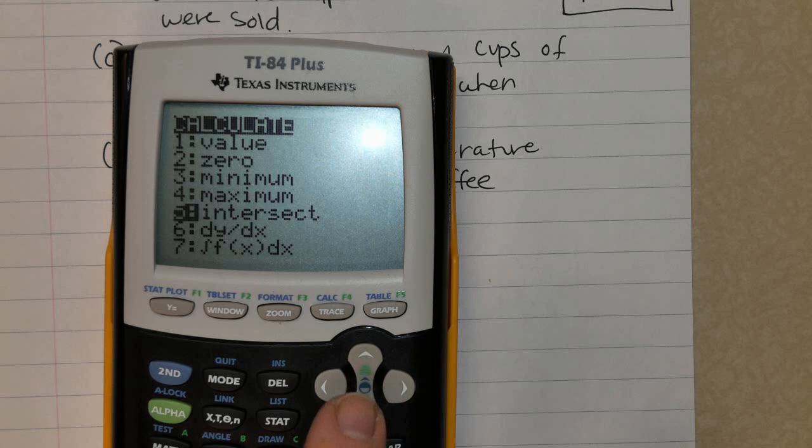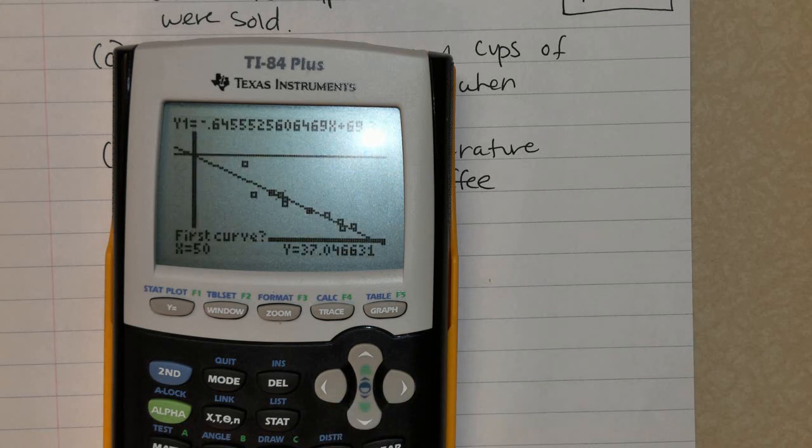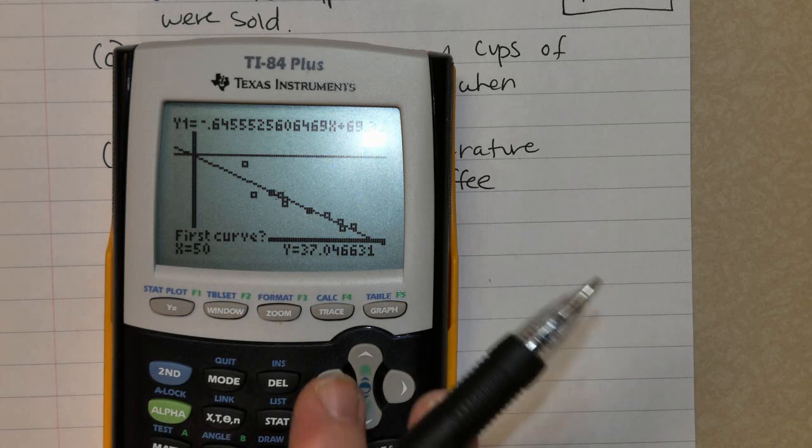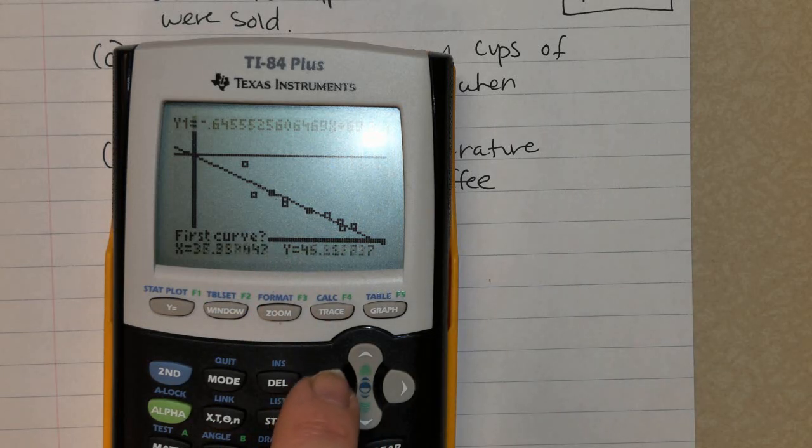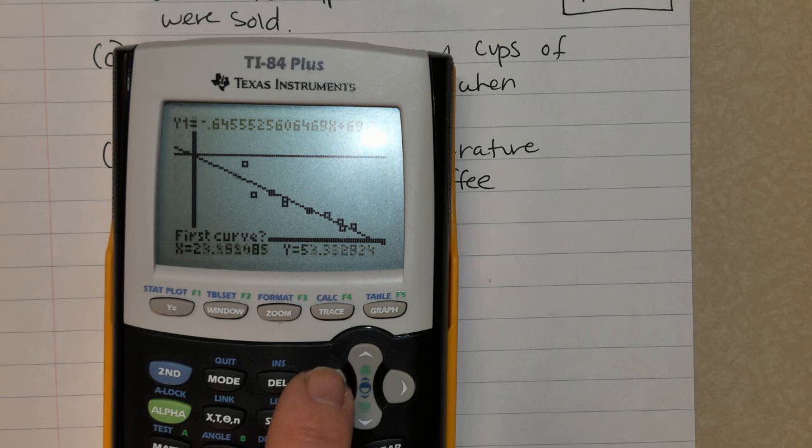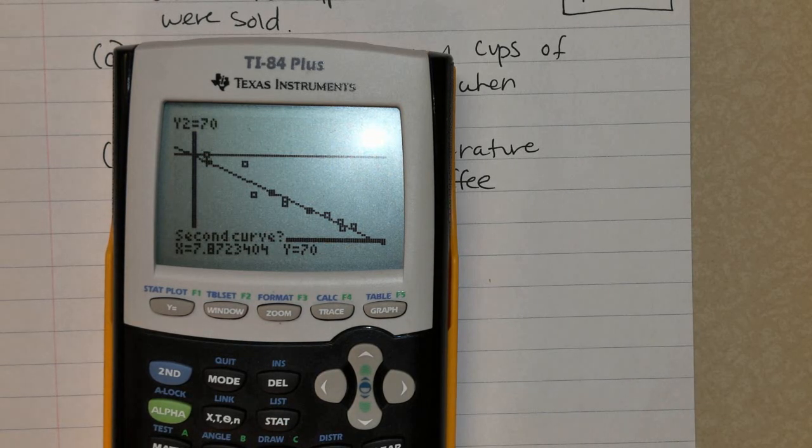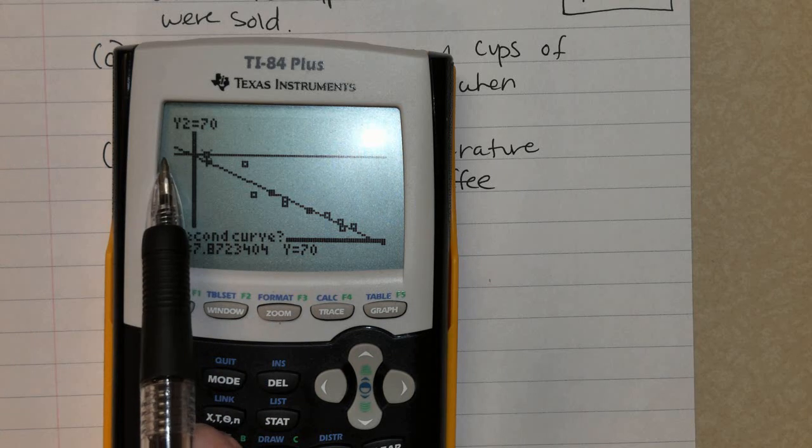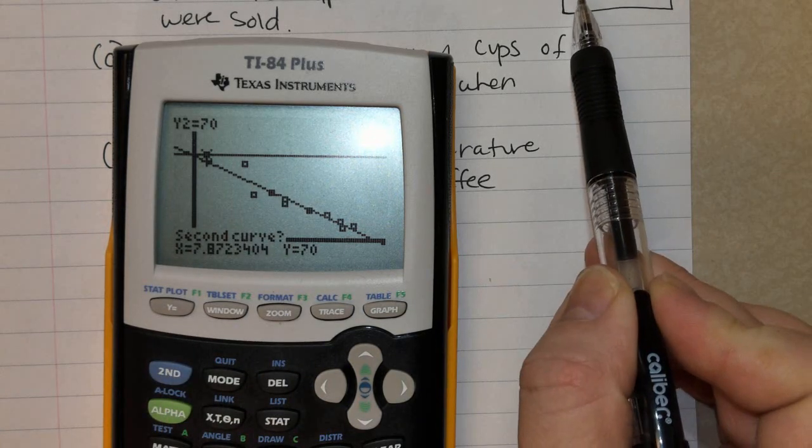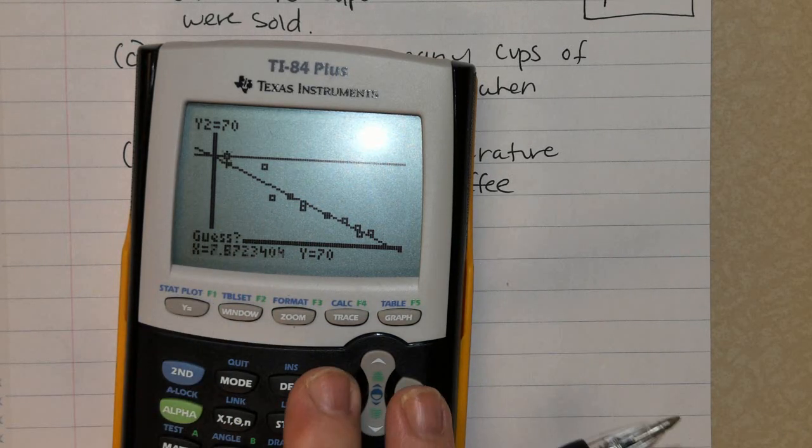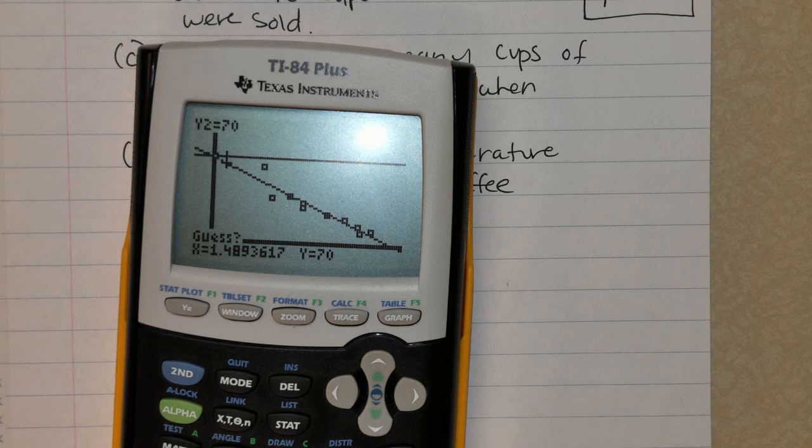Go down to intersect and press enter. When it says first curve, all it means is what is the first equation you plugged in, and we know that's a line of best fit. So I'm going to use this little cursor, and I'm going to keep going until I get close to where I see that those two lines intersect. How close do you get? Fairly close. You press enter one time, and it's going to jump to where it says second curve. All that means is what is the second equation we plugged in? That was the horizontal line y equals 70. Press enter again. And now it says what is your guess? I'm going to go over the top of where they intersect, and I press enter.